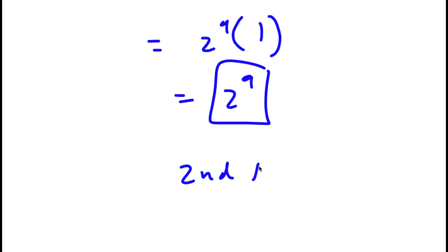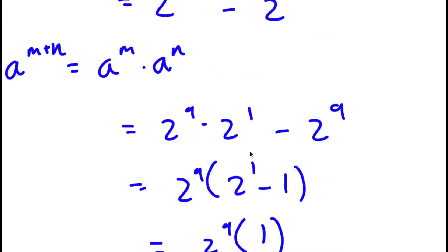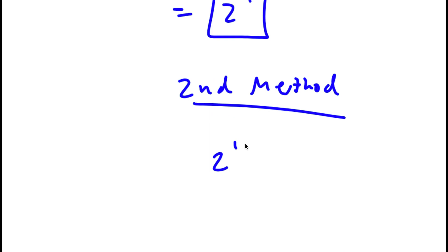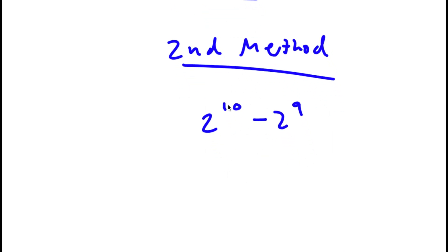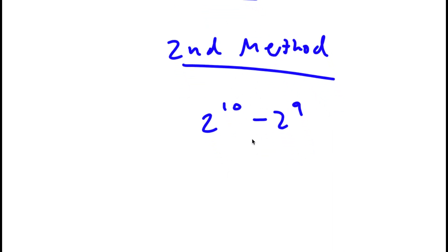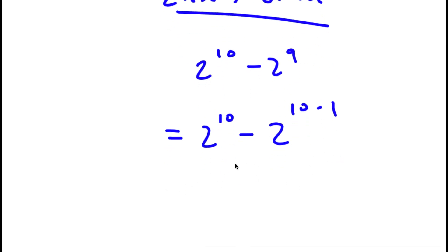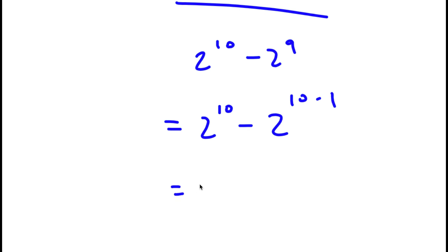Now, a second method of solving this problem. Again, 2 to the power of 10 minus 2 to the power of 9. This time, instead of replacing 10 with 9 plus 1, I'm going to replace 9 with 10 minus 1. So now I have 2 to the power of 10 minus 2 to the power of 10 minus 1, which I can rewrite as 2 to the power of 10 minus 2 to the power of 10 plus negative 1.